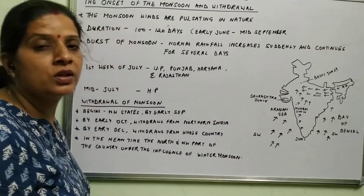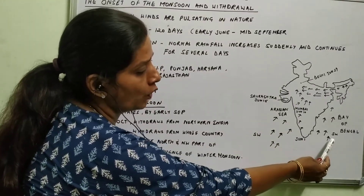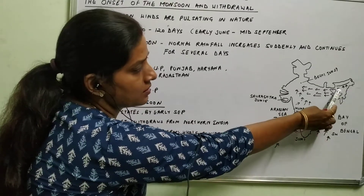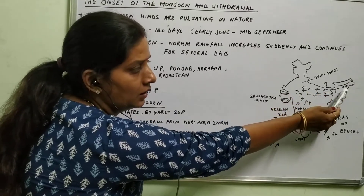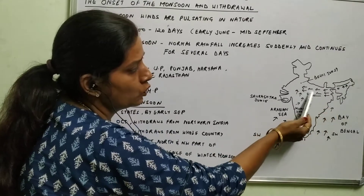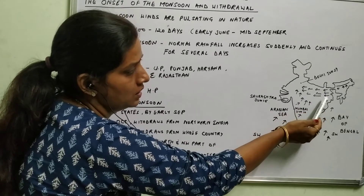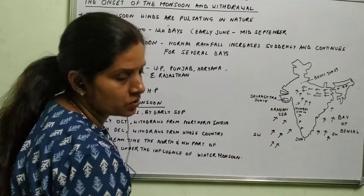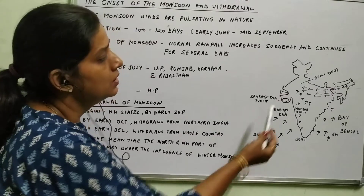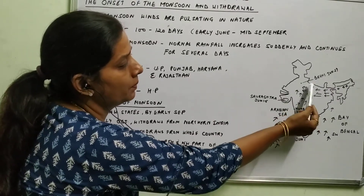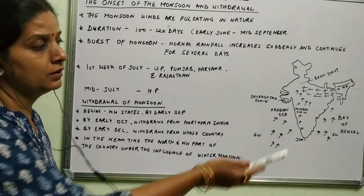Saurashtra refers to a few districts of Gujarat. In the meantime, the Bay of Bengal branch of the southwest monsoon moves towards Assam. Due to the presence of the Himalayas, it strikes the Himalayas, then turns towards the western side, starts moving towards the Ganga plains, and gives rainfall in parts of West Bengal, Bihar, Jharkhand, Uttar Pradesh, and a few parts of Haryana. Both branches, being branches of the southwest monsoon, merge together in the Ganga plains and the northwestern part of India, giving rainfall to that part.